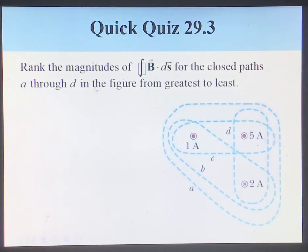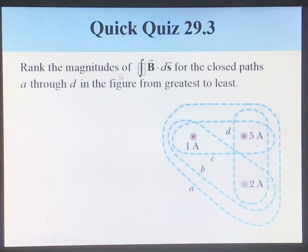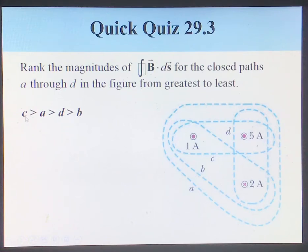Now let's look at Quick Quiz 29.3, which will help us understand what Ampere's law is about. It asks us to rank the magnitudes of the line integral of the magnetic field for each of the different paths. The answer is C greater than A greater than D greater than B. For path C, the total current is 1 amp plus 5 amps, giving 6 amps.